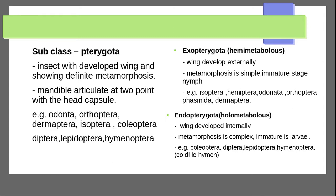Hemimetabola: there is no pupal stage; transition is directly from larva to adult. The metamorphosis stages are: egg, larva, and adult. Examples include orders such as Isoptera, Coleoptera, and Diptera. The mandibles are articulate with a distinct head capsule.